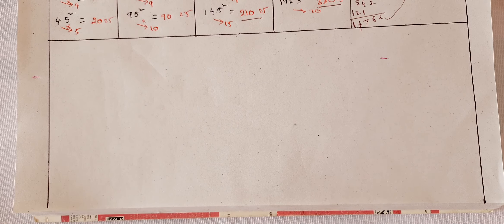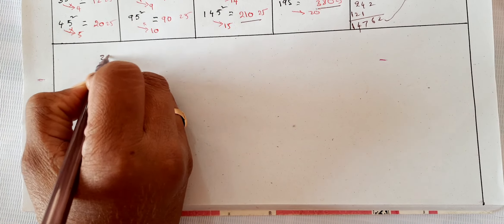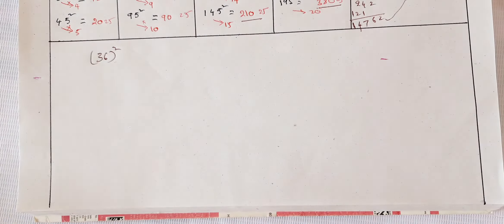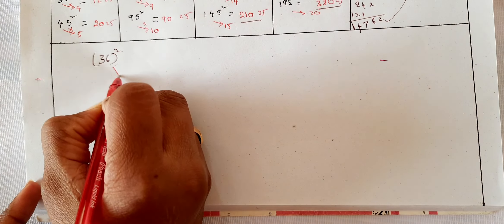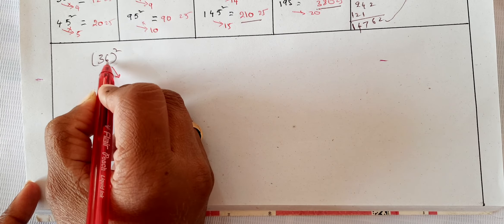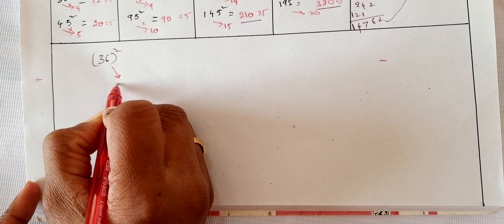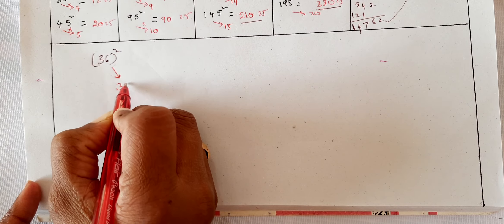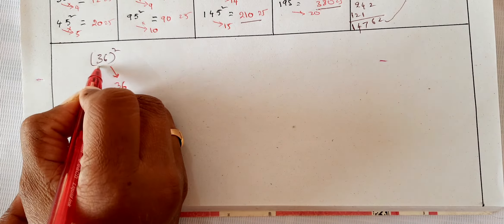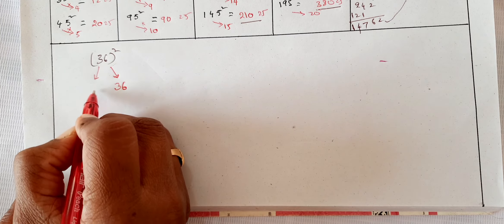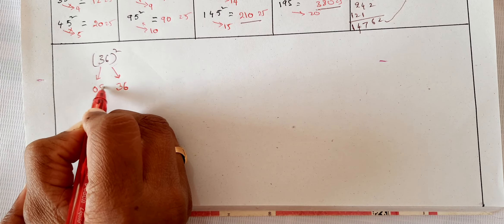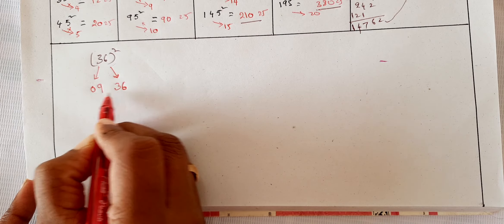We will go to the next trick now. Just listen to the concept, you can do it by yourself. Let me take 36 whole square, okay? So the concept here is: whatever is there in units place, square of that, write it in two-digit form. 36. Whatever is there in tenth place, square of that, write it in two-digit form: 09, 36, right?